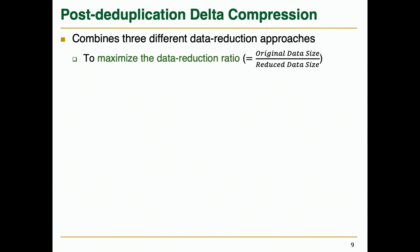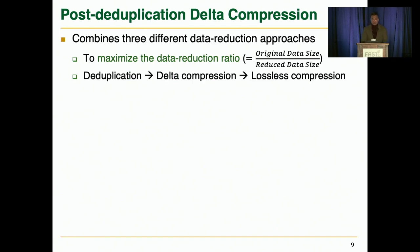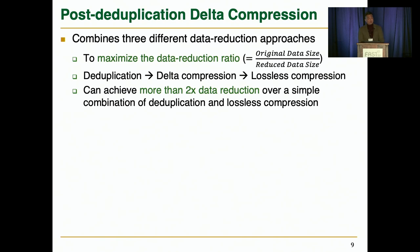Post-deduplication data compression combines three different data reduction approaches to maximize the data reduction ratio. It performs deduplication, delta compression, and lossless compression in order, and is known to be able to achieve more than 2x data reduction over a simple combination of deduplication and lossless compression.